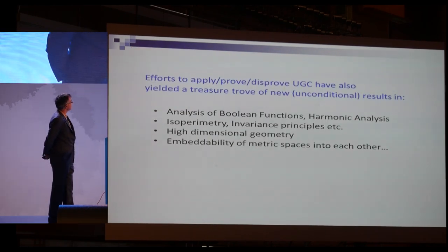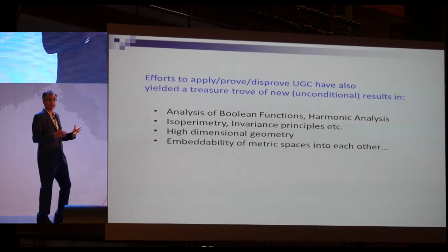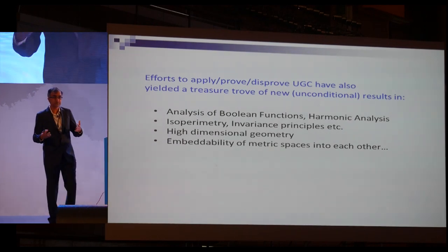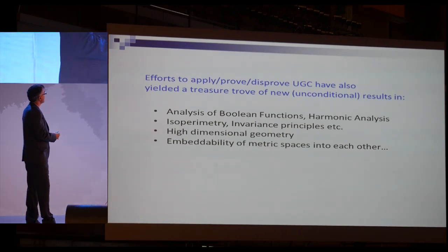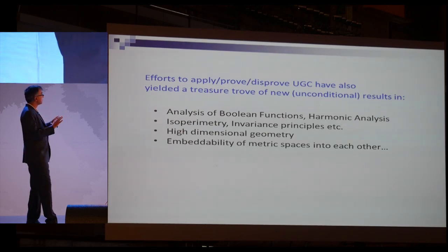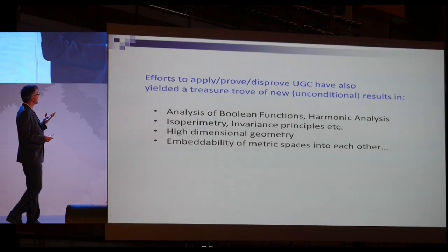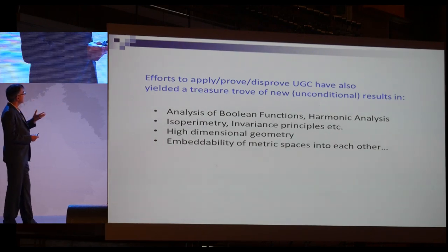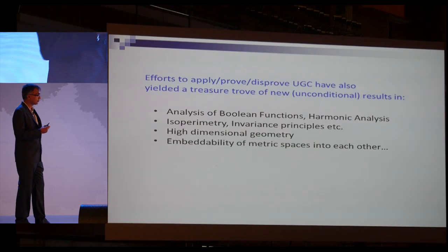Efforts to apply, prove, or disprove the UGC have also yielded a treasure trove of new unconditional results — results that don't even mention the unique games conjecture. These include results in analysis of Boolean functions, harmonic analysis, isoperimetry, invariance principles, high-dimensional geometry, and embeddability of metric spaces into each other.